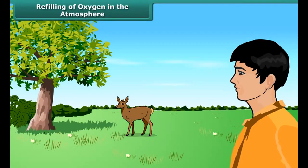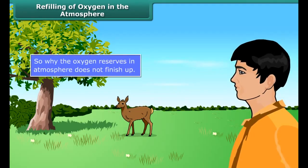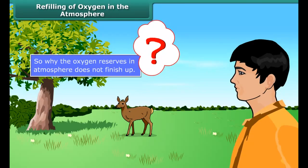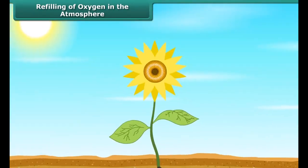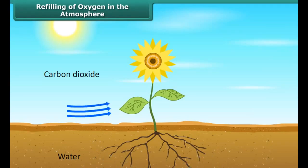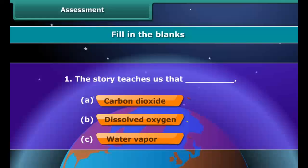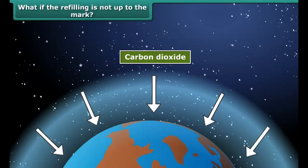Several billions of humans, animals, and other organisms consume a huge amount of oxygen from the atmosphere every day. So why don't the oxygen reserves in the atmosphere finish up? During photosynthesis, plants produce and release oxygen into the atmosphere. Plants also consume oxygen for respiration, but they produce more than they consume — so plants silently save us from dying without even being noticed.